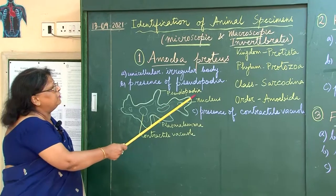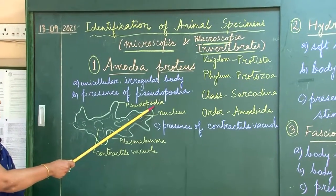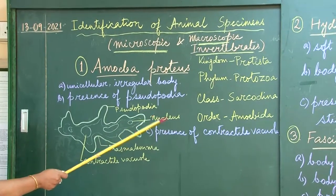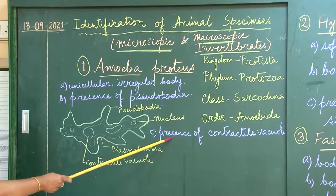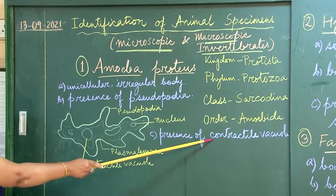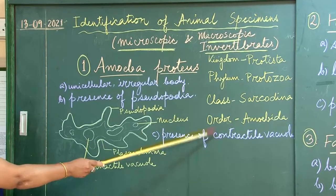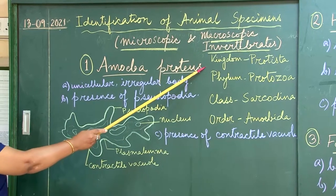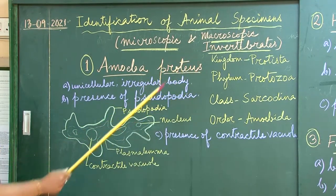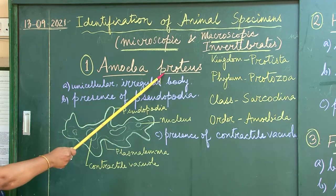It is known as pseudopodia, or false foot-like structure. It helps them to locomote, and there is a presence of a special type of vacuole whose volume changes — we call it a contractile vacuole. It belongs to kingdom Protista under phylum Protozoa. This is Amoeba proteus.